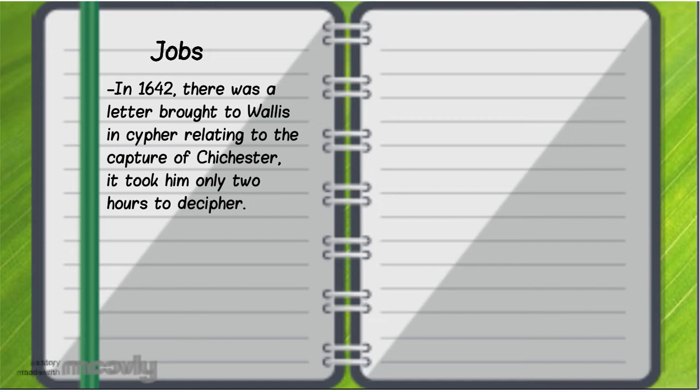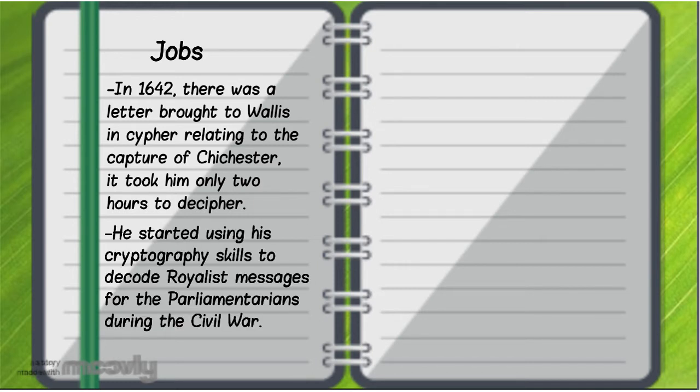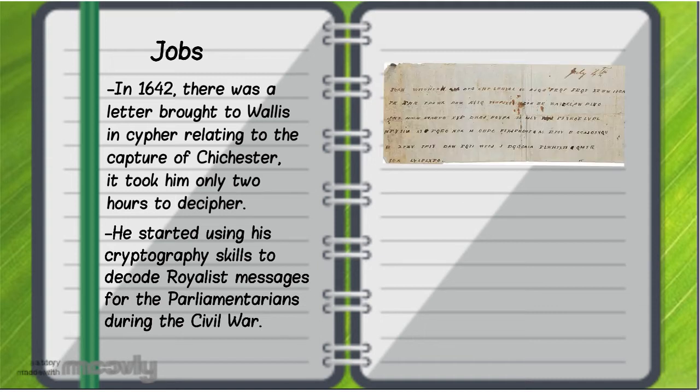In 1642, there was a letter brought to Wallis in cipher relating to the capture of Chichester. It took him only two hours to decipher. He started using his cryptography skills to decode royalist messages for the parliamentarians during the Civil War.